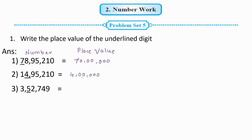Next number: 3,52,749. The underlined digit is 5. 5 is in the 10,000 place, so the place value of 5 is 50,000.